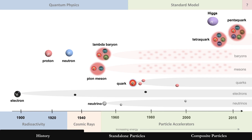Everything is grouped into families: neutrinos and electrons, quarks, mesons, and baryons — discovered from particle accelerators. What's also important is that increasing energy over the years allowed more particles to be discovered. You can see families of particles here; the mesons and baryons are so numerous that not all of them are charted.